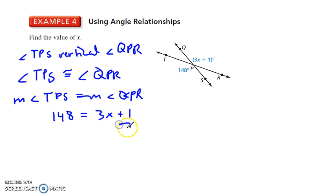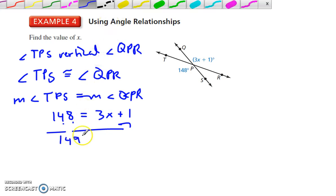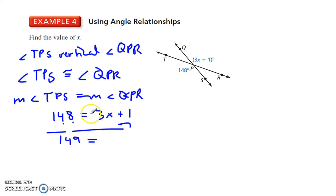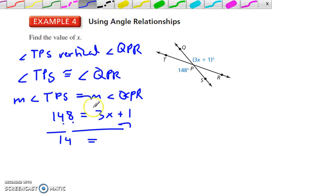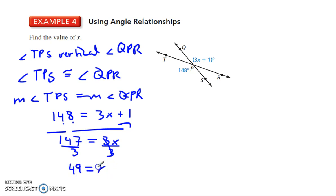Solving for x: subtract 1 from both sides to get 147 equals 3x. Divide by 3, and 147 divided by 3 is 49. So x equals 49. Make sure you read your questions closely to confirm what you're looking for.